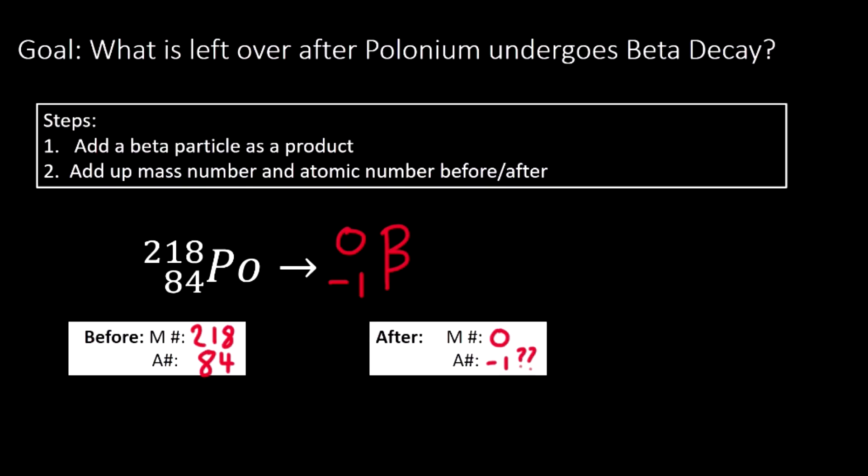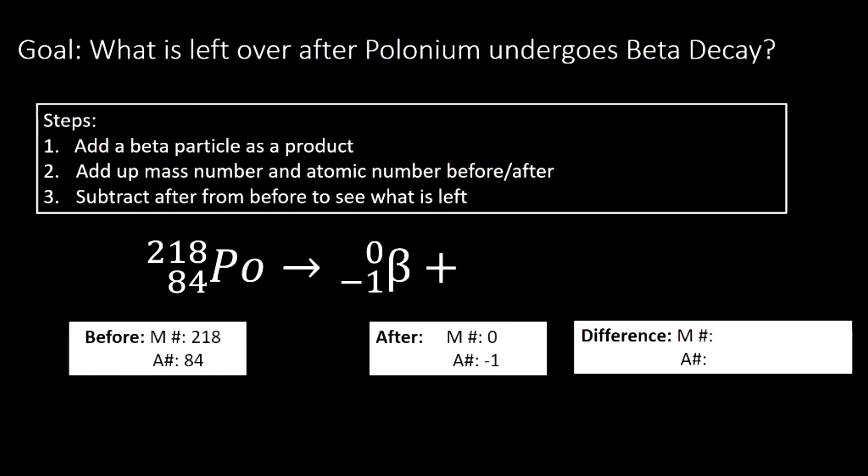Remember that our beta particle is taking a neutron and making it a proton. So that negative one is going to make our math work out so that you can see that the atomic number increases because a neutron becomes a proton. The next step is to subtract the after from the before to see what's left over. For our mass number, we have 218 minus zero, which just gives us 218.